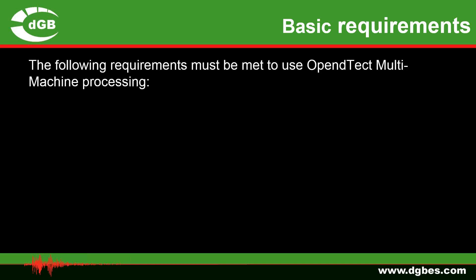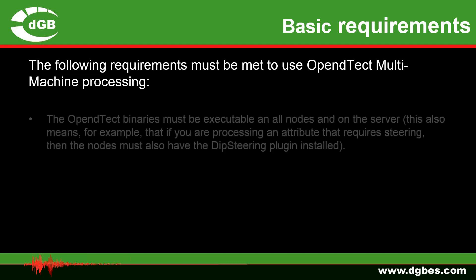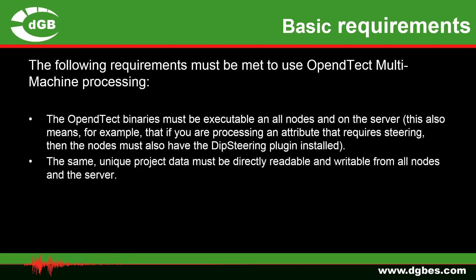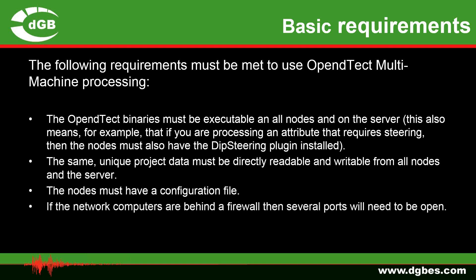A couple of basic requirements must be met in order for OpenDTec multi-machine processing to function correctly. The OpenDTec binaries must be executable on all nodes and on the server. This also means that if you are processing an attribute that requires steering, then the nodes must also have the DIP steering plugin installed. The same unique project data must be directly readable and writable from all nodes and the server. The nodes must have a configuration file — often referred to by its short name, the batch hosts file. And if the network computers are behind a firewall, then several ports will need to be opened.